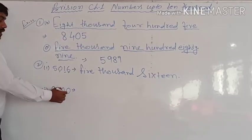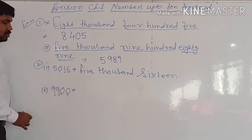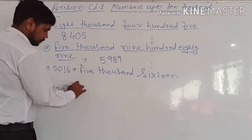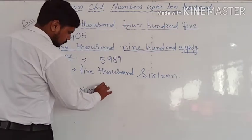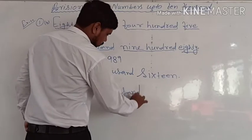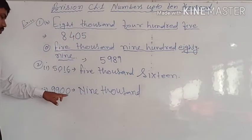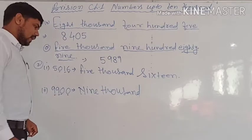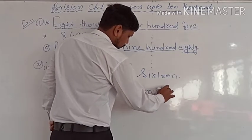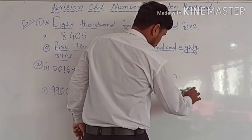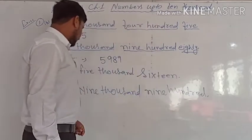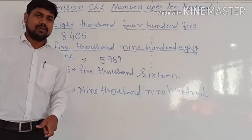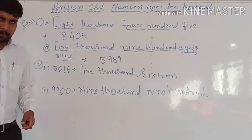Next: ones, tens, hundreds, thousands — we have 9,000. Then hundreds place: 9, so 900. So we read this number as nine thousand nine hundred — 9,900.